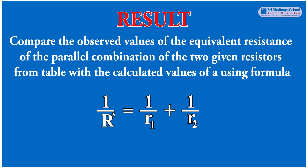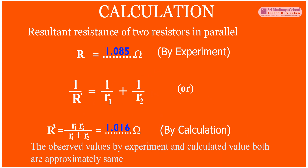The result: compare the observed values of the equivalent resistance of the parallel combination of the two given resistors from the table with the calculated values using the formula 1 by R' is equal to 1 by R1 plus 1 by R2. The resultant resistance by experiment is R = 1.085 Ohm. By calculation: R' = R1 × R2 divided by R1 + R2 = 1.016 Ohm. Therefore, the observed value by experiment and the calculated value are approximately the same.